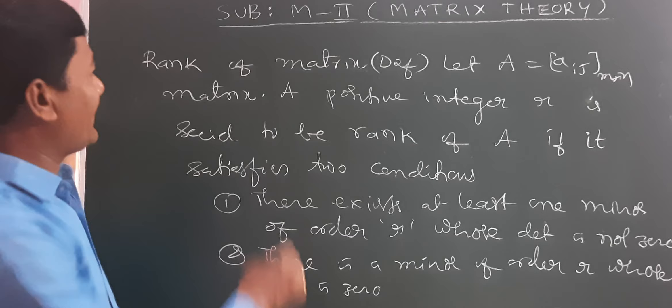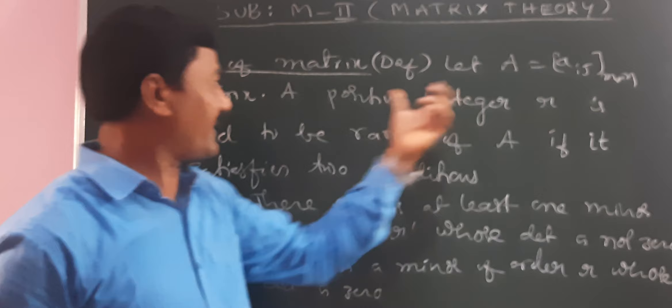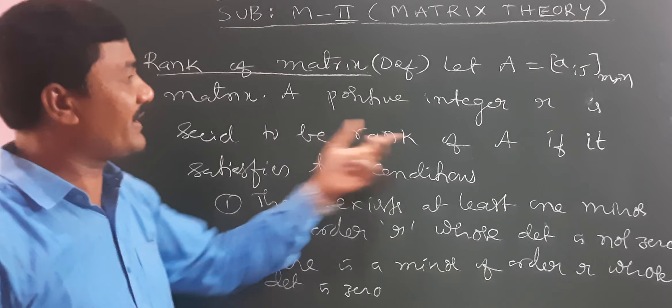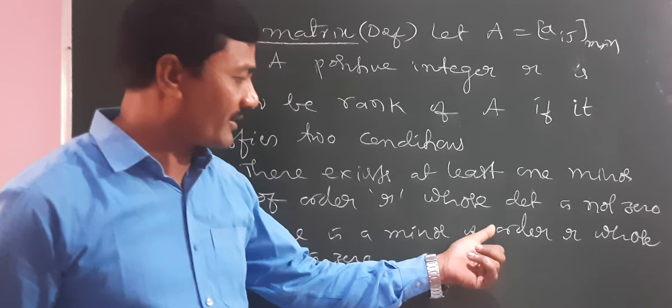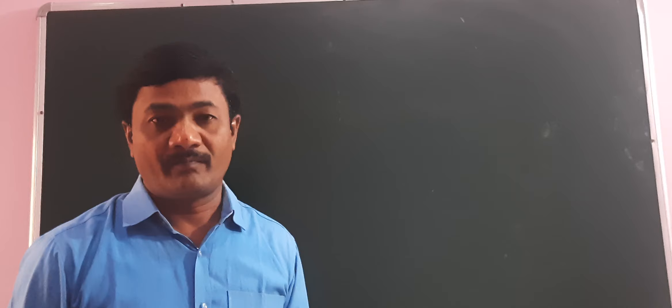So, the rank of matrix definition is: given A, any M by N matrix, a positive integer small r is said to be the rank of A if it satisfies the following two conditions. Condition one: there exists at least one minor of order r whose determinant is not zero. Condition two: there is a minor of order r+1 whose determinant is zero. From condition one we conclude rank of A is greater than or equal to R, and from condition two, rank of A is less than r. From one and two, rank of A is equal to R.